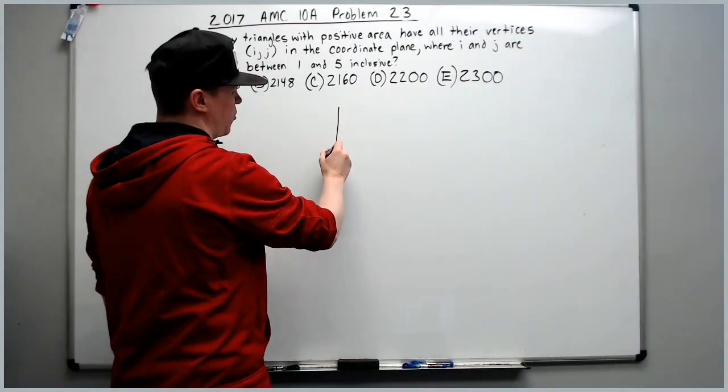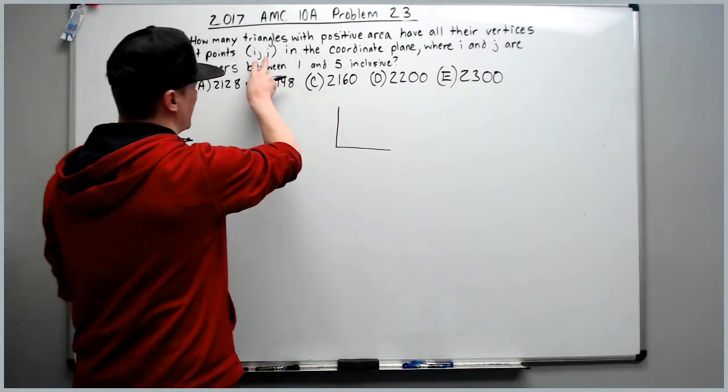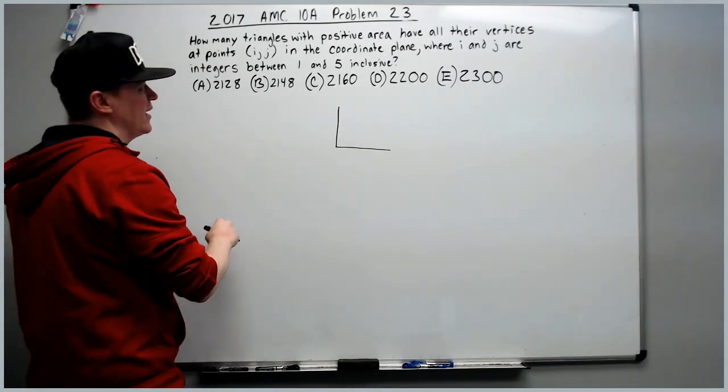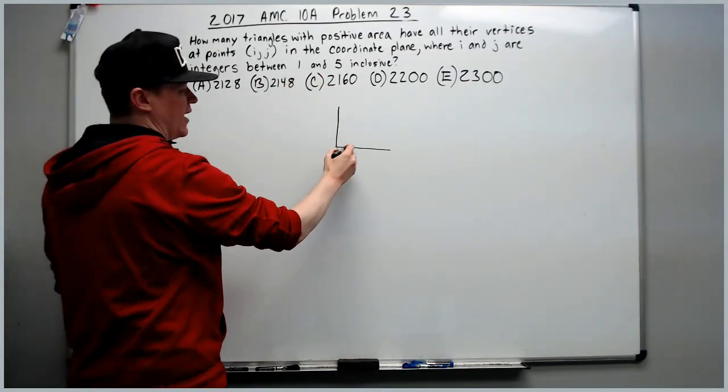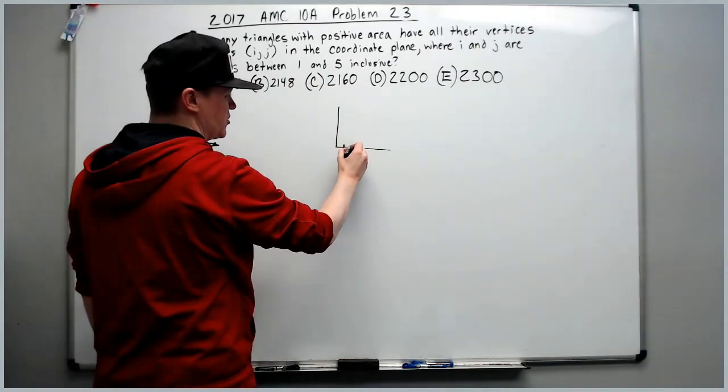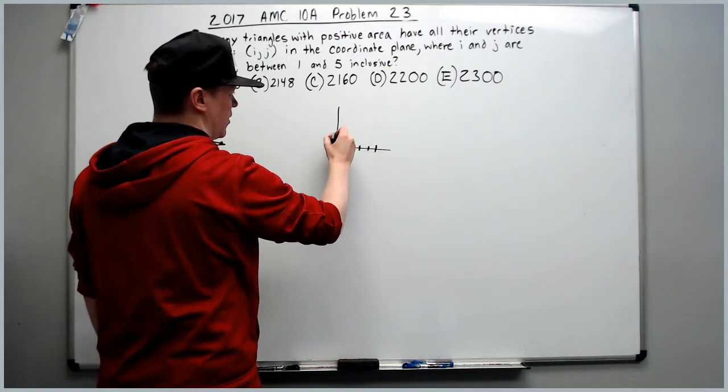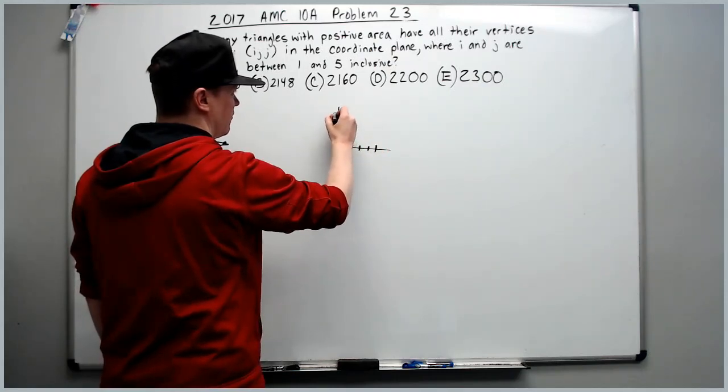So let's look at the first quadrant because these are x, y coordinates basically and they range from 1 to 5. So let's go x values, 1, 2, 3, 4, 5, 1, 2, 3, 4, 5.